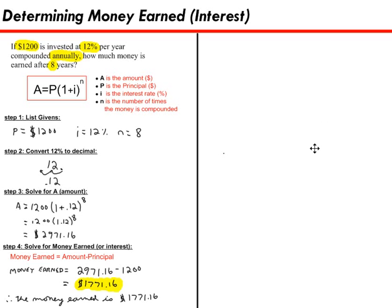Okay, grab your paper and let's get ready to practice finding out how much money somebody's earned. Here is your practice problem. If $2,000 is invested at 10% per year, compounded annually, how much money is earned after five years? So try that one on your own and you can click when you're ready.